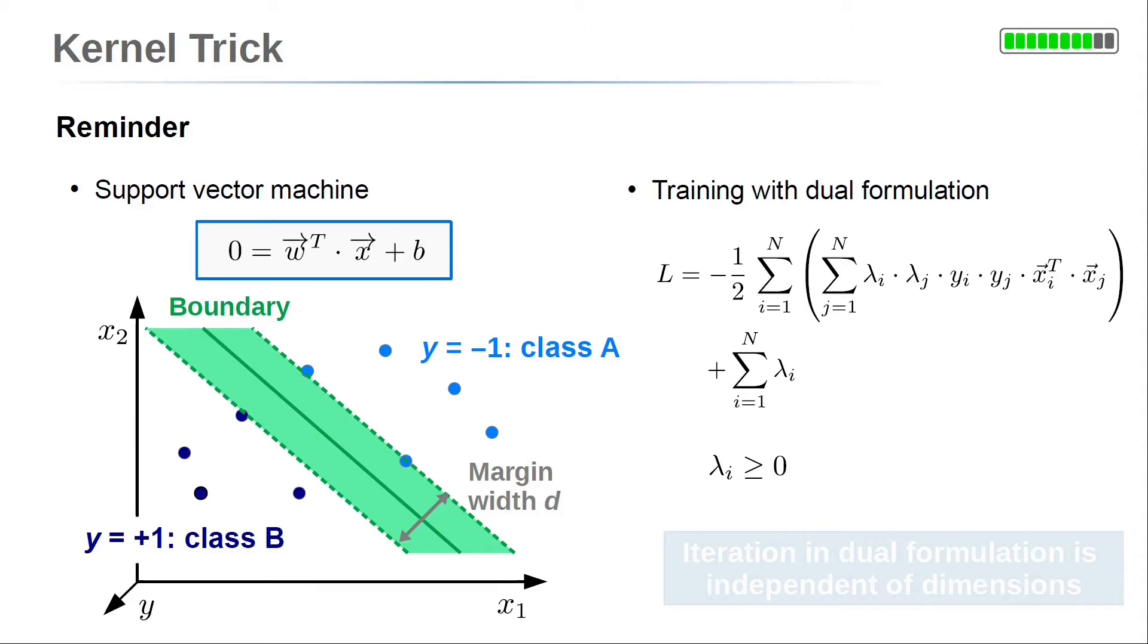We learned about training of support vector machines by Lagrangian function capital L. The constraints were reduced to Lagrangian multipliers lambda greater than or equal to zero. This dual formulation makes the optimization problem independent of the dimensions of the input variables. This means we can take more information from more input variables into account without additional computational costs.